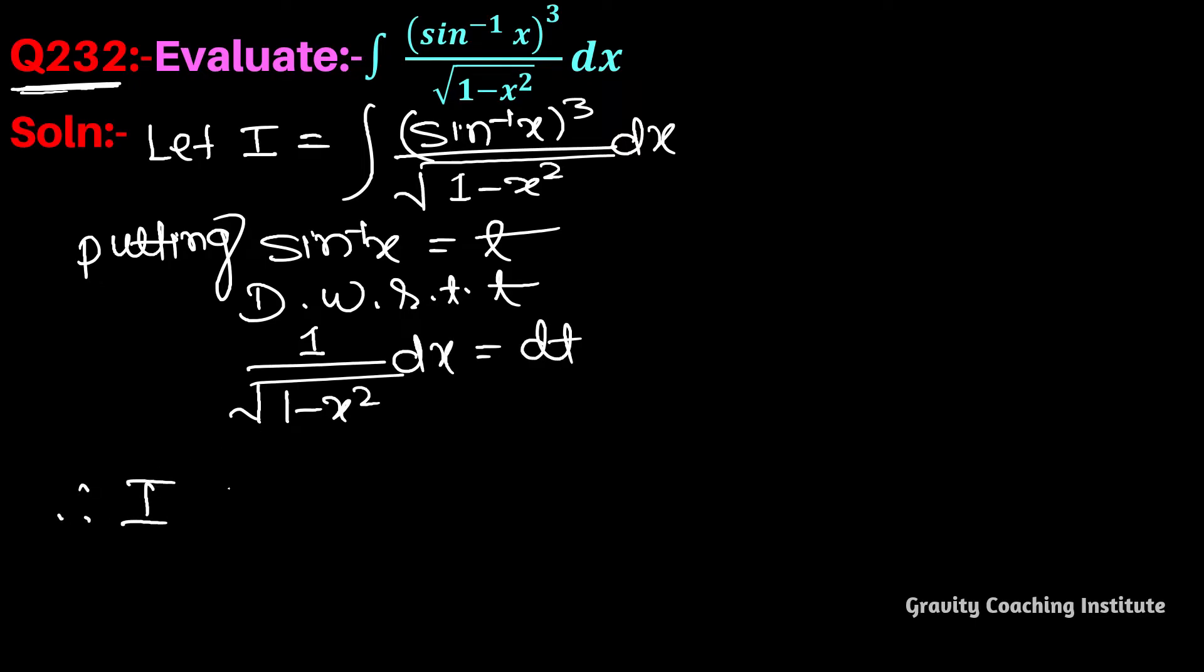So therefore, I equal to integration. Humne sin inverse x ko t let liya hai, to yeh hoga t cubed. Aur 1 by square root 1 minus x square dx ke jagah dt. Aur t cubed ka integration hota hai t to the power 4 by 4.